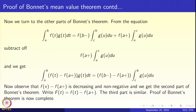Now we deal with the other two parts of Bonnet's theorem. Subtracting f(a+) times the integral from a to c of g(u) du from both sides, we get the integral from a to b of (f(t) minus f(a+)) g(t) dt equals (f(b−) minus f(a+)) times the integral from c to b of g(u) du. We observe that f(x) minus f(a+) is decreasing and non-negative, giving us the second part of Bonnet's theorem. Setting F(t) equal to f(t) minus f(a+), the proof of Bonnet's theorem is complete.